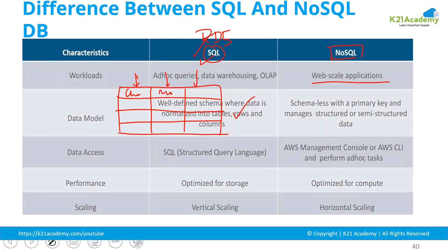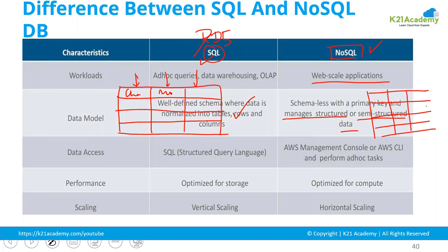It is a well-defined structure that you need to provide for a SQL database. But if you have a requirement where you do not have a structured database, or you have semi-structured data to be stored where you are not aware of the table structure, then you can use NoSQL databases where every row can have a different structure. You can store semi-structured data that is related via a primary key.